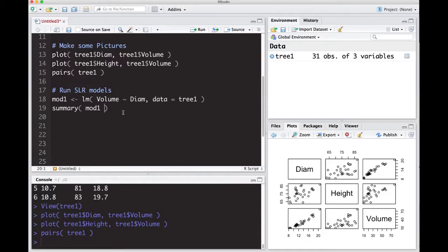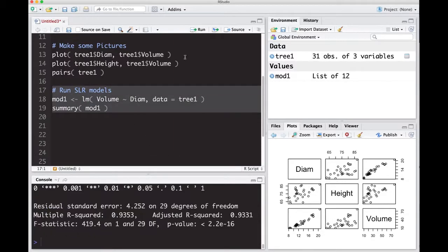We just want to see how well this works by itself. I run this and I see here what I'm really interested in is this R-squared. The adjusted R-squared is 0.9331, so we're explaining about 93 percent of the variation by using diameter as a predictor for volume. That's pretty good.